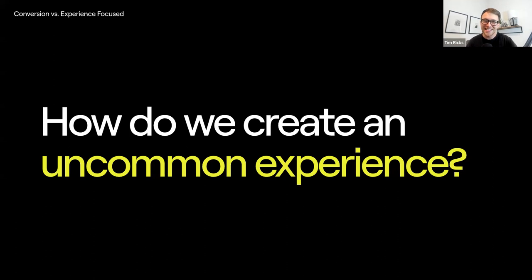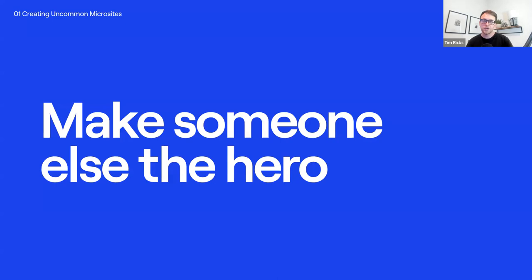Here's where we get to the good part — the practical tools and tips of how to create an uncommon microsite. There are three steps. The first one is: make someone else the hero. It's all about putting the spotlight on them and not on ourselves. The visitor is in complete control — they're the hero of the story. We're just there basically as their sidekick. We're Yoda, they're Luke Skywalker; we're helping them along the way.